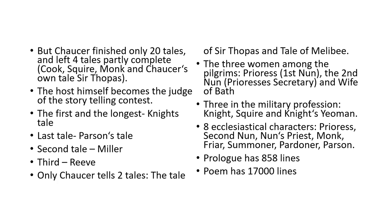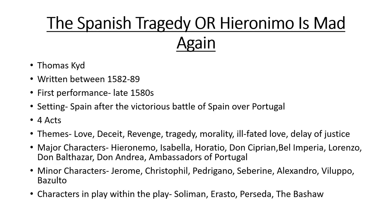Eight ecclesiastical characters include Prioress, Second Nun, Nun's Priest, Monk, Friar, Summoner, Pardoner, and Parson. The prologue has 858 lines and the poem has 17,000 lines.